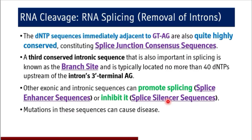Mutations in these sequences can cause disease, because without them RNA splicing will not occur properly and the correct protein will not be synthesized.